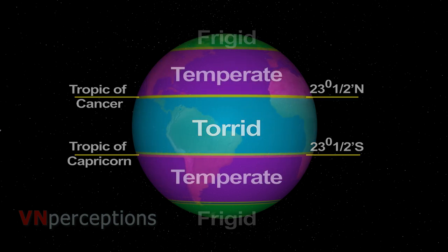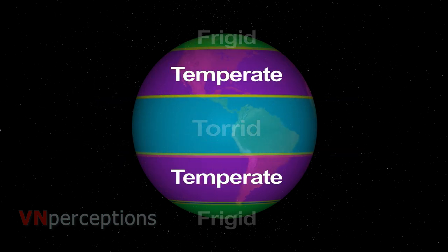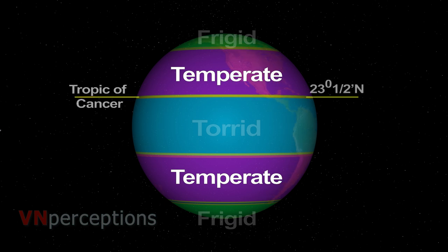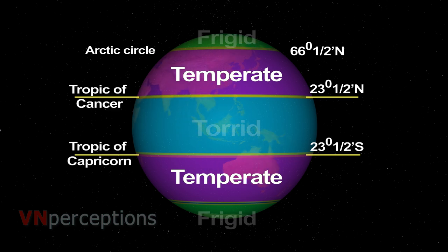The temperate zone lies between tropic of Cancer and Arctic Circle in the north and tropic of Capricorn and Antarctic Circle in the south. These regions receive slanting rays of the sun, so they never receive vertical rays of the sun.